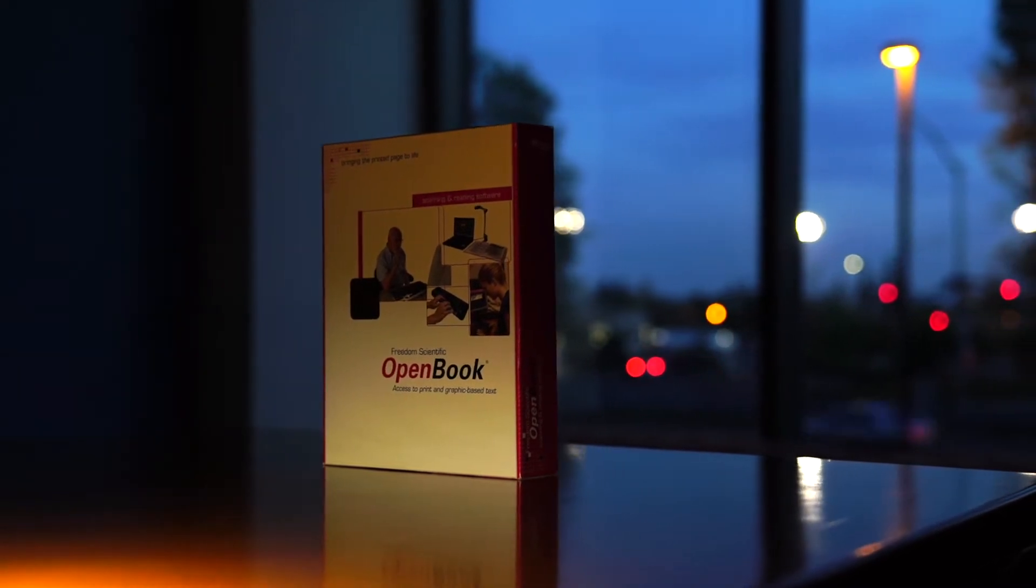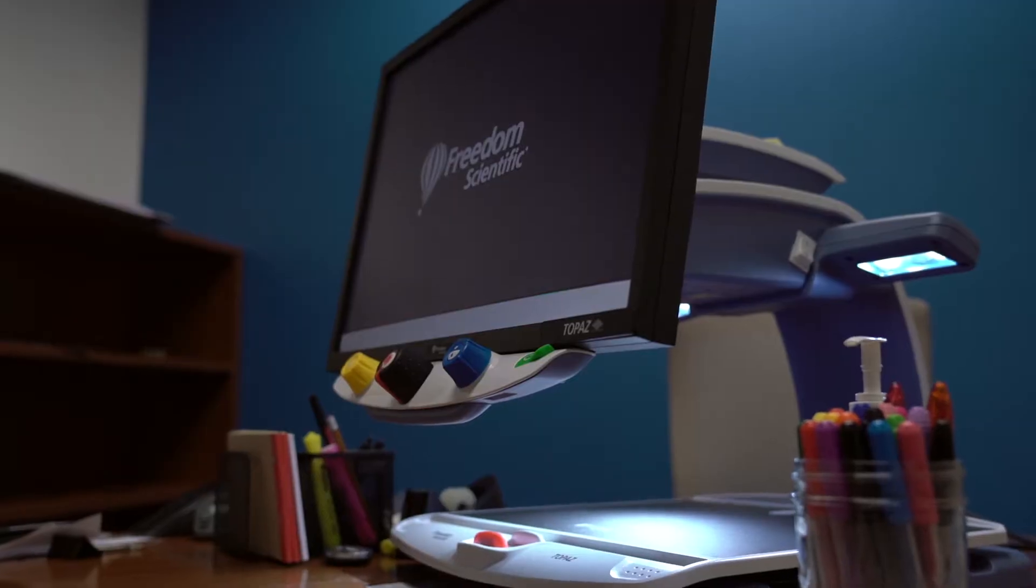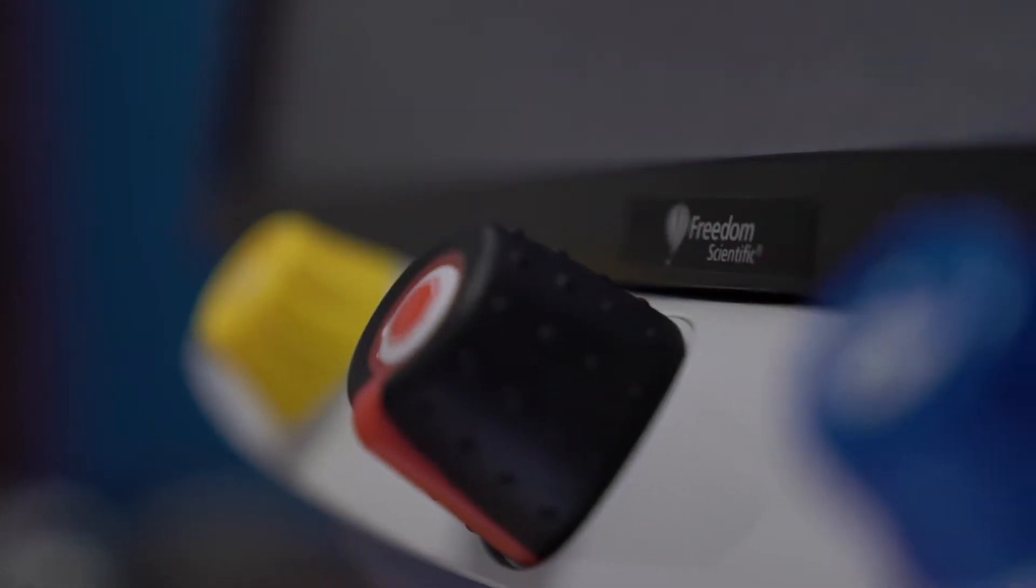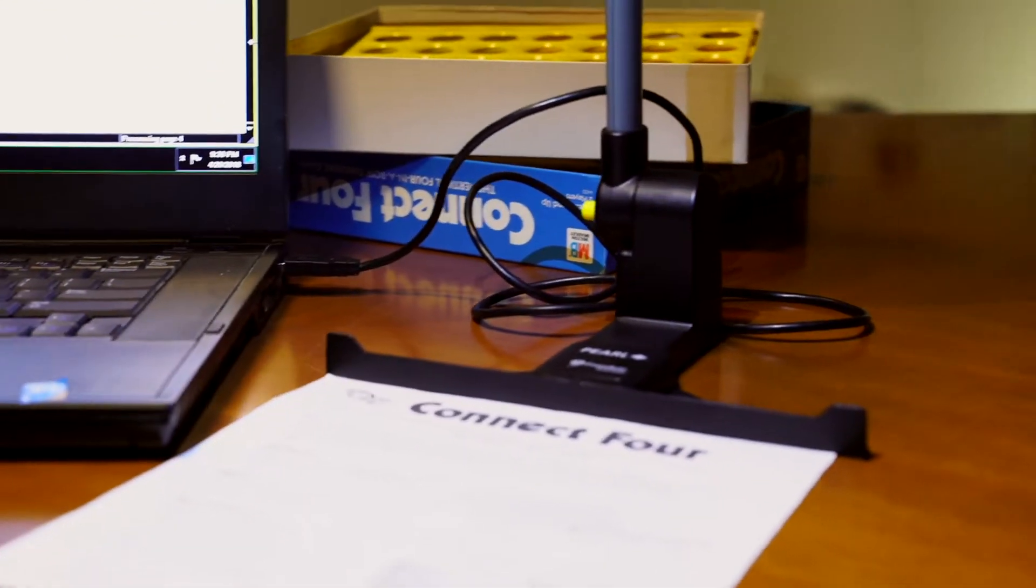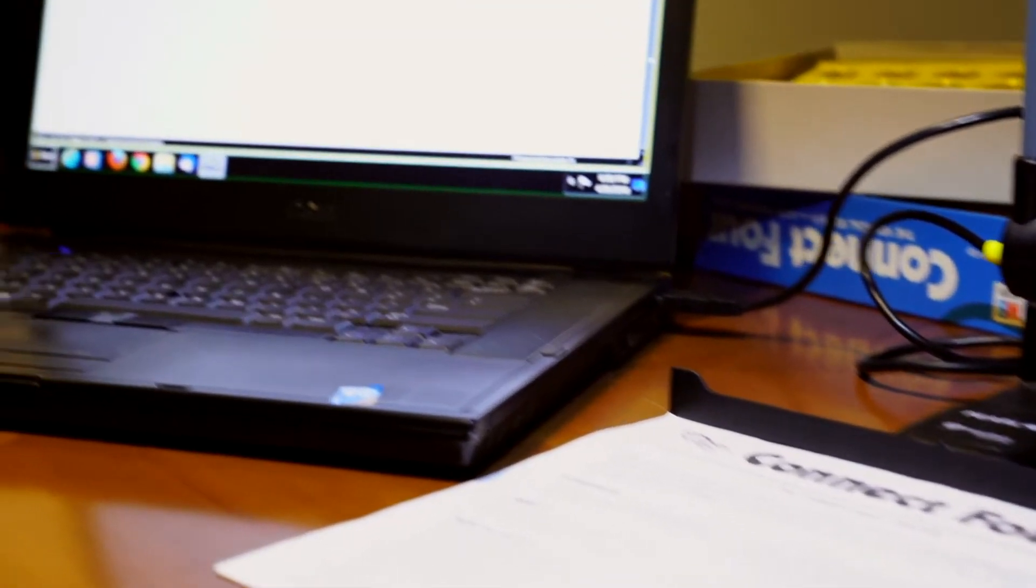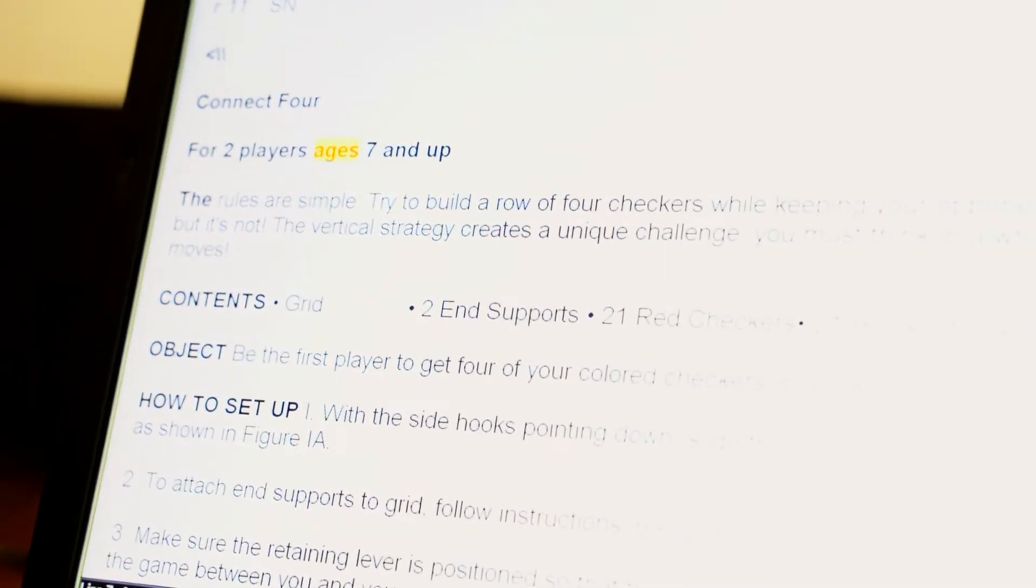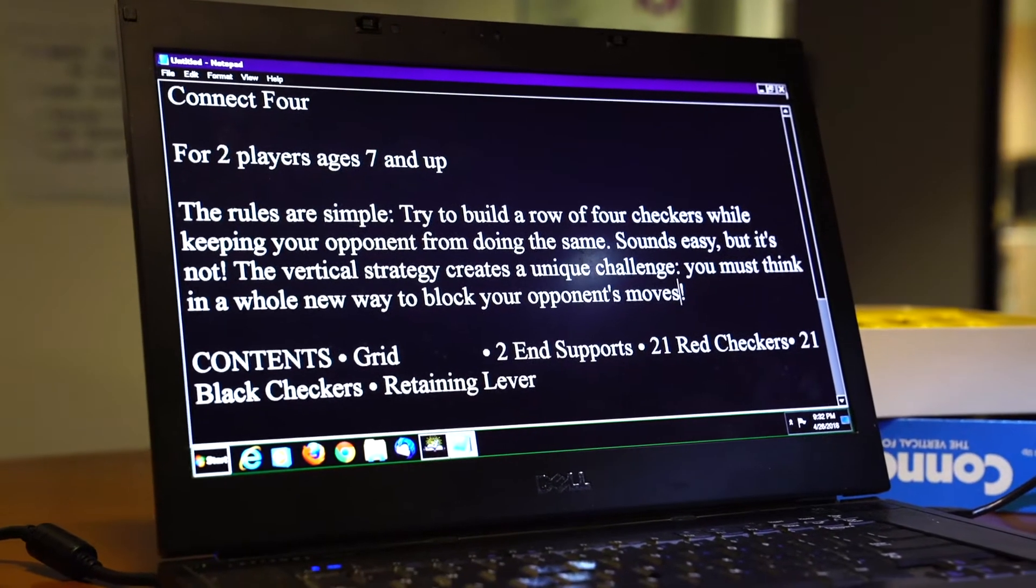This is Open Book, a program designed by Freedom Scientific, an assistive technology company whose CCTV device made an appearance in our last episode. Open Book is a program that converts documents into digital text using Optical Character Recognition or OCR for short. The program is designed only for Windows computers and comes with a desktop camera that plugs into your computer and enables you to load these digital documents on your computer via Open Book software or other word processing programs like Microsoft Word.